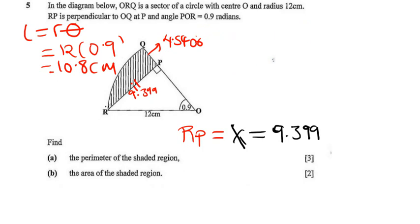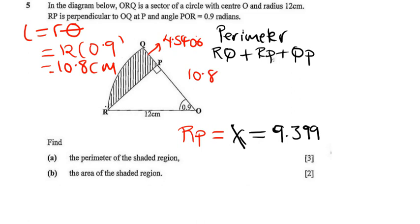I hope you've understood whatever I've done because that's very important. Now to find the perimeter, we're going to add. Our perimeter is going to equal the arc length, which is RQ, plus RP, plus QP. So we have RQ which is 10.8, RP which is 9.399, and then plus QP which is 4.5406. So approximately we have 24.7396 centimeters.